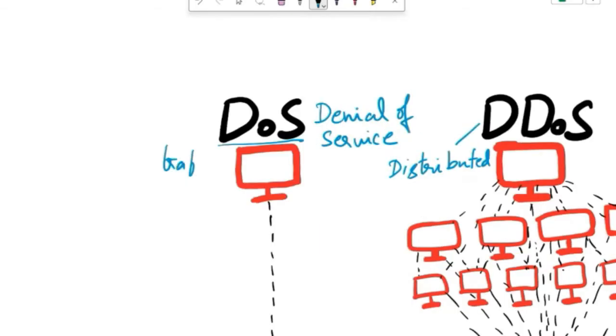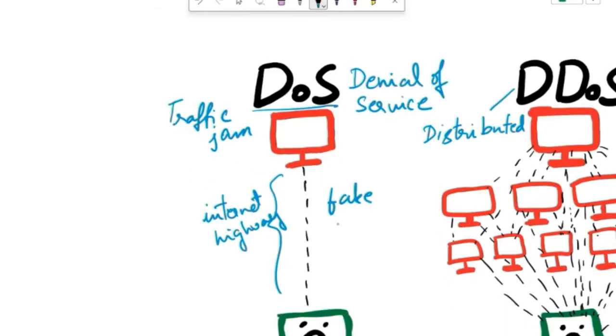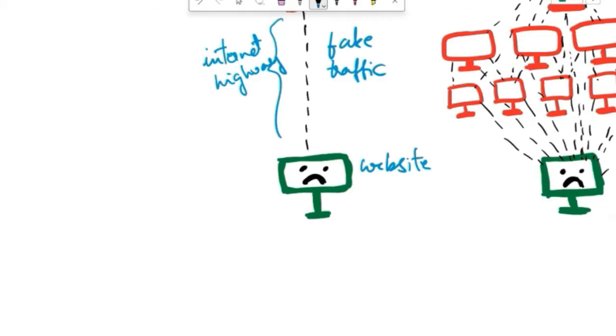A denial of service attack is like a traffic jam on the internet highway. Imagine someone sends so much fake traffic to a website that it gets overwhelmed and can't handle any real visitors. Say this is the website.